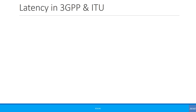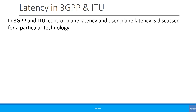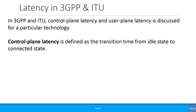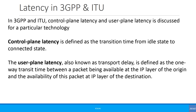How is latency defined in 3GPP and ITU? In 3GPP and ITU, control plane latency and user plane latency are discussed for a particular technology. Control plane latency is defined as the transition time from idle state to connected state. User plane latency, also known as transport delay, is defined as the one-way transit time between a packet being available at the IP layer of the origin and the availability of that packet at the IP layer of the destination.